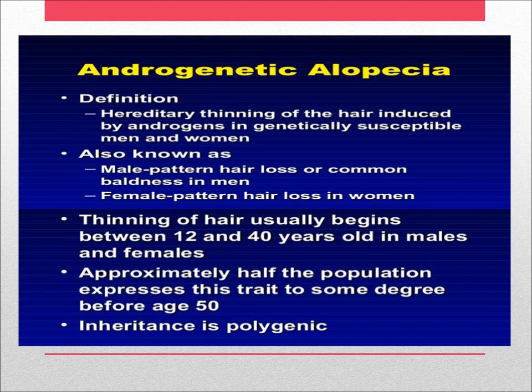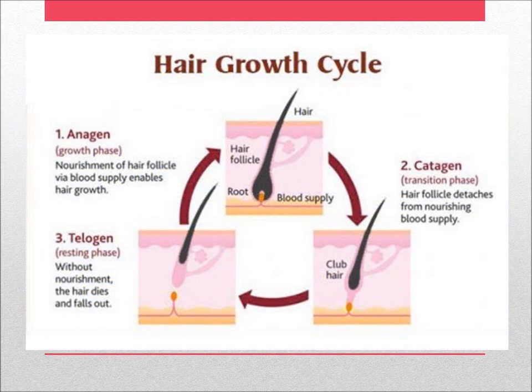Now we'll discuss the hair growth cycle. There are three phases: first is anagen, also called the growth phase — nourishment of hair follicles via blood supply enables hair growth. Second is catagen, also called the transition phase — hair follicles detach from the nourishing blood supply. Third is telogen, also called the resting phase — without nourishment, the hair dies and falls off.